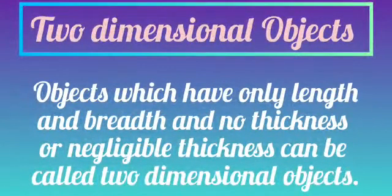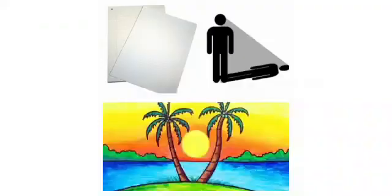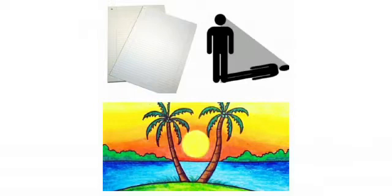Two-dimensional objects are objects which have only length and breadth and no thickness, or negligible thickness. For example, sheets of paper, pictures on paper, and shadows are examples of two-dimensional objects. These objects have only length and breadth — there is no thickness or height. So they are all two-dimensional objects.